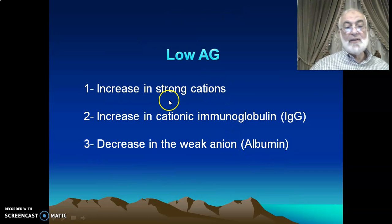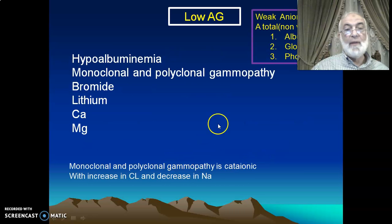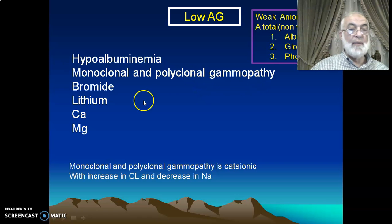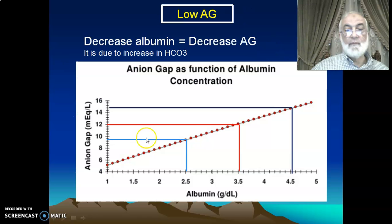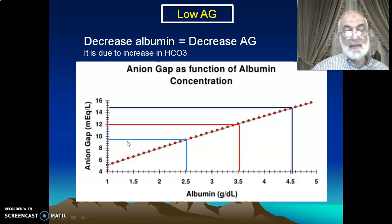Low anion gap occurs with increase in unmeasured strong cations, or increase in cationic immunoglobulins, or decrease in weak anions such as in hypoalbuminemia. Low anion gap causes include hyperalbuminemia — actually hypoalbuminemia — monoclonal and polyclonal gammopathy, bromide, and lithium. Decrease in albumin is associated with decrease in anion gap because decrease in albumin is associated with increase in bicarbonate.